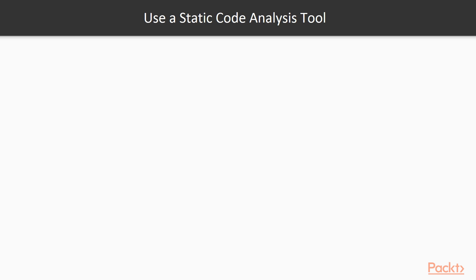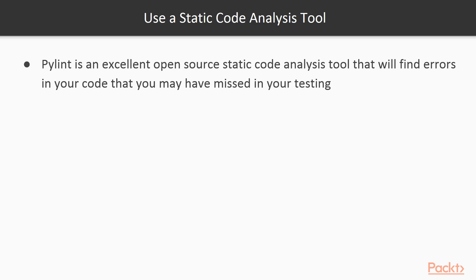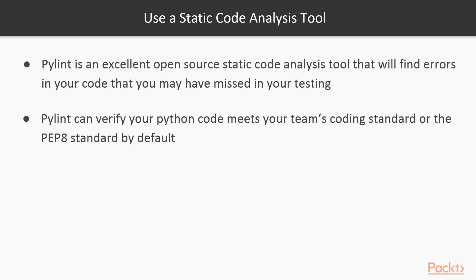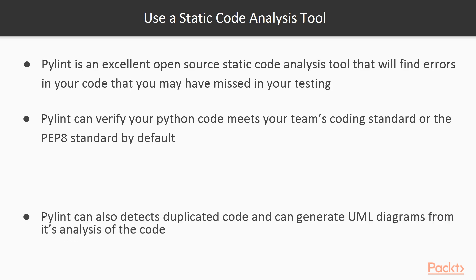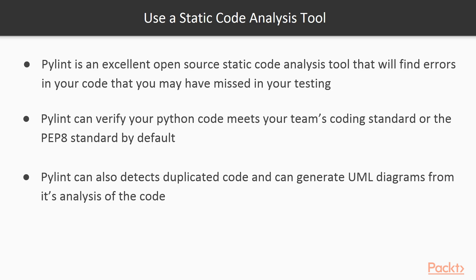Using a static code analysis tool regularly on your codebase is another core requirement for ensuring code quality. PyLint is an excellent open-source static analysis tool for Python that can be used for detecting bugs in your code. It can also verify the code is formatted to the team's standards, and it can even generate UML diagrams based on its analysis.